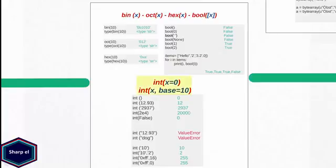Now let's move to the next function: int, short for integer. The int function takes a string or a number as an argument and converts it into an integer. If you call int without any argument it returns 0. If you pass a floating point number, int truncates the decimal portion.